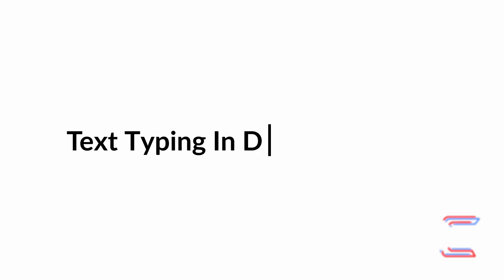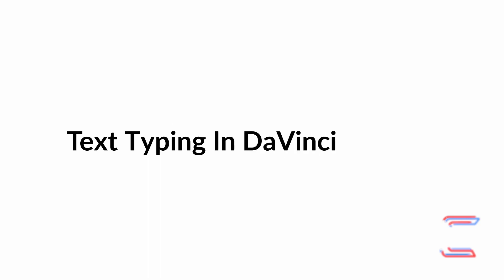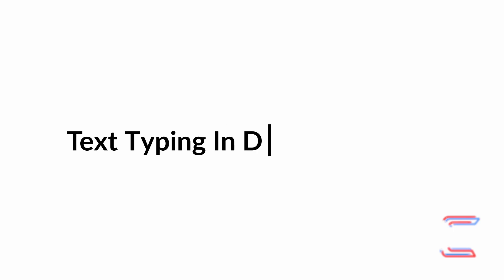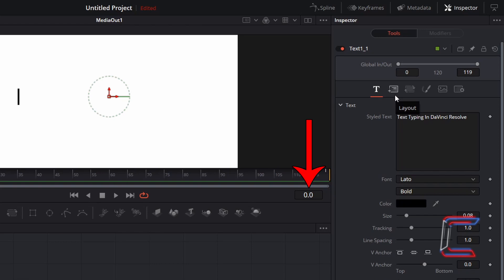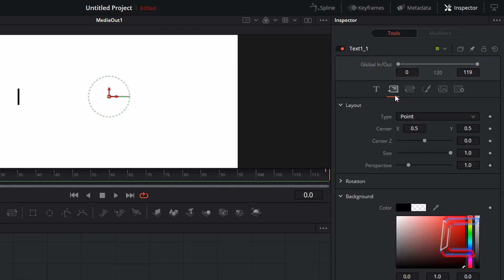A problem with our current animation is that the blinking cursor line appears right in the middle of each letter. Where we want it to be is to the right side of each character which appears. In order to adjust the position of your blinking cursor line, ensure that you are at frame 0, go to Layout, and to shift the cursor to the right of the letters, I will change Center X to 0.52.